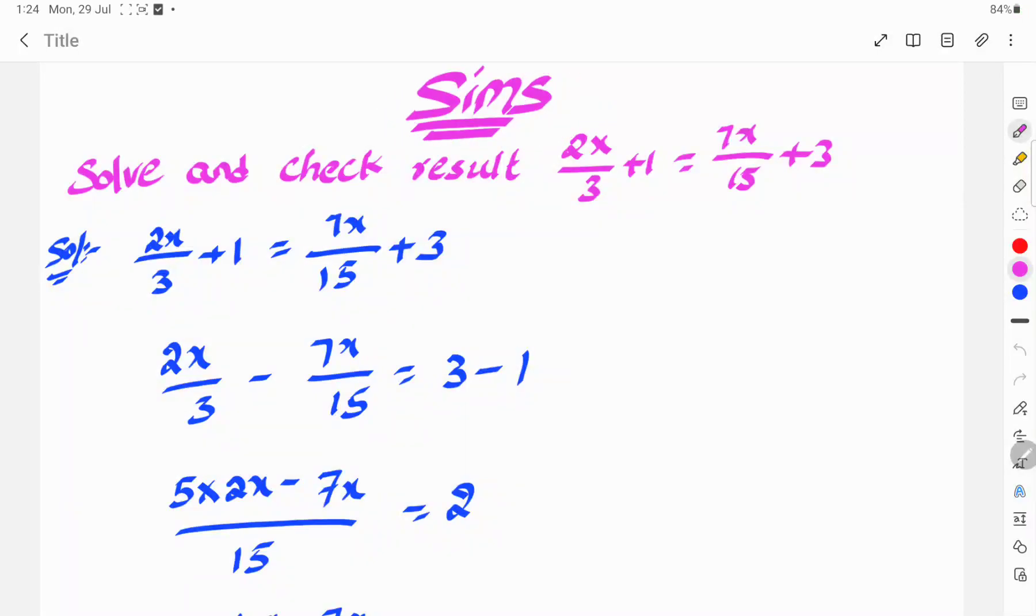Hi, welcome to CineCenter's topic. Solve and check result: 2x by 3 plus 1 is equal to 7x by 15 plus 3.